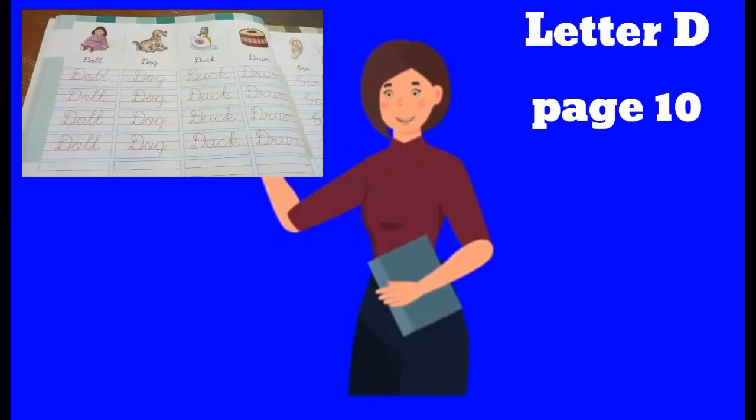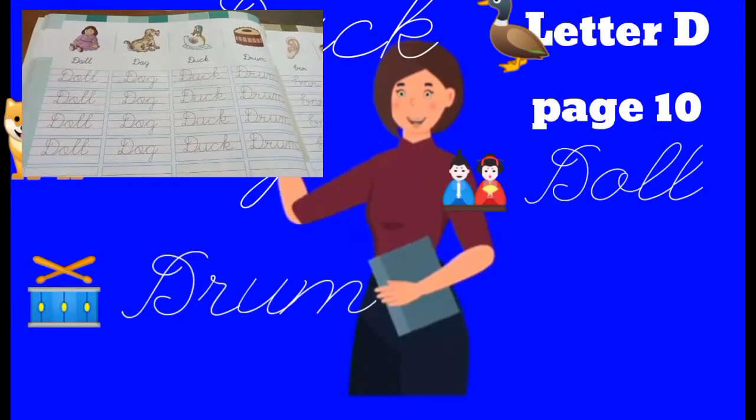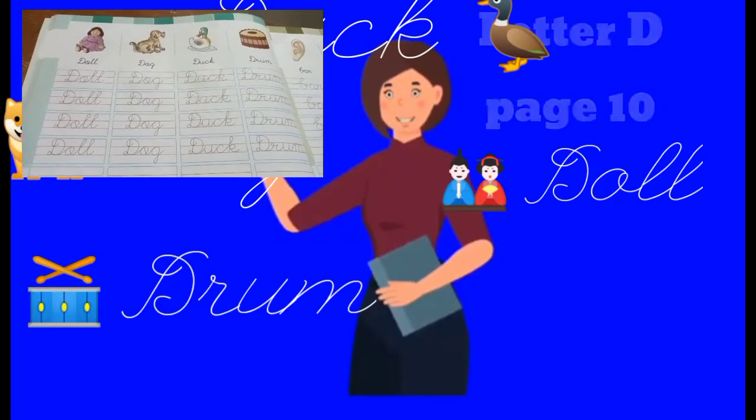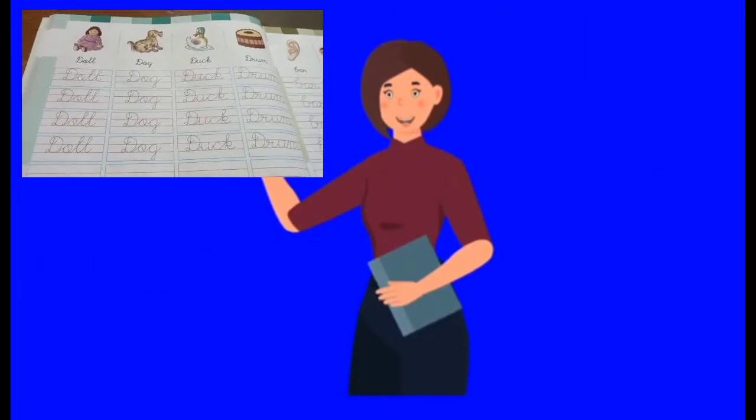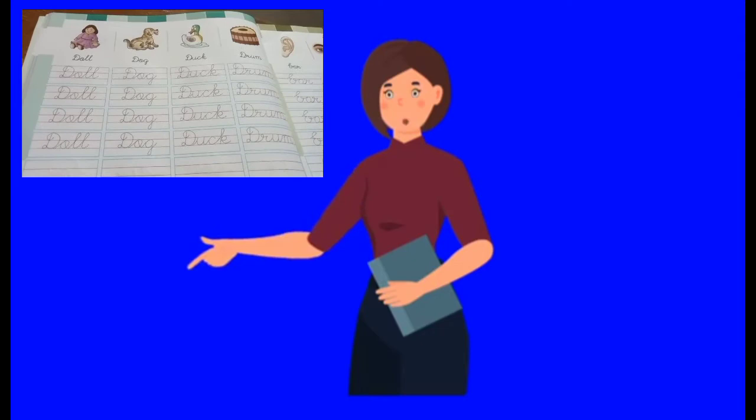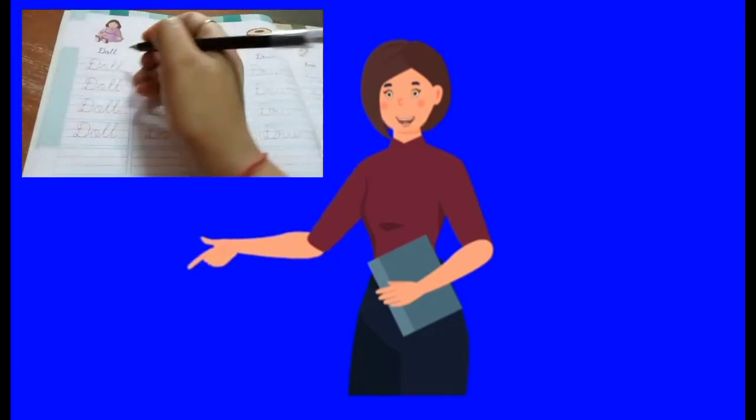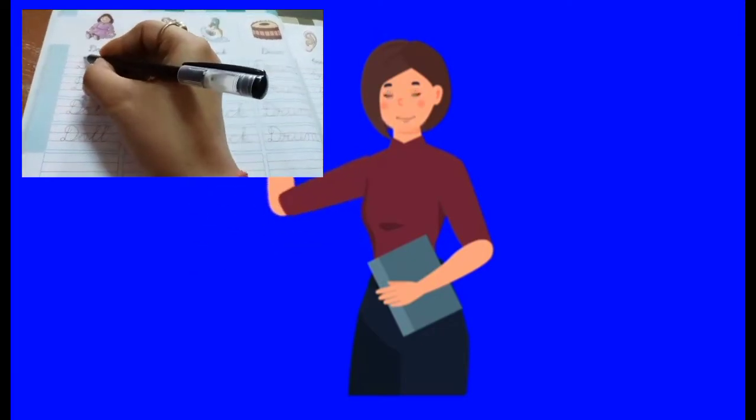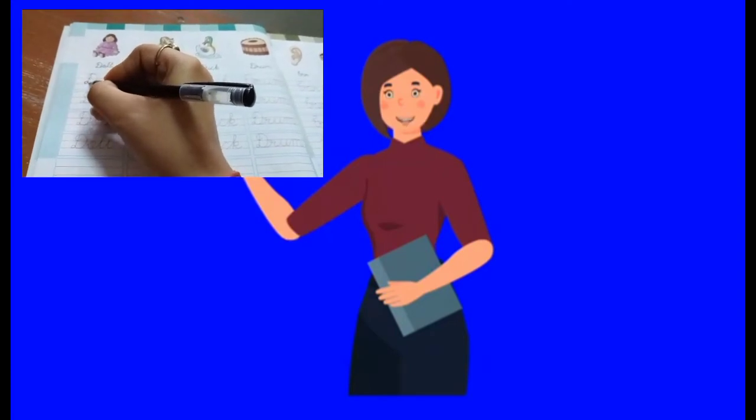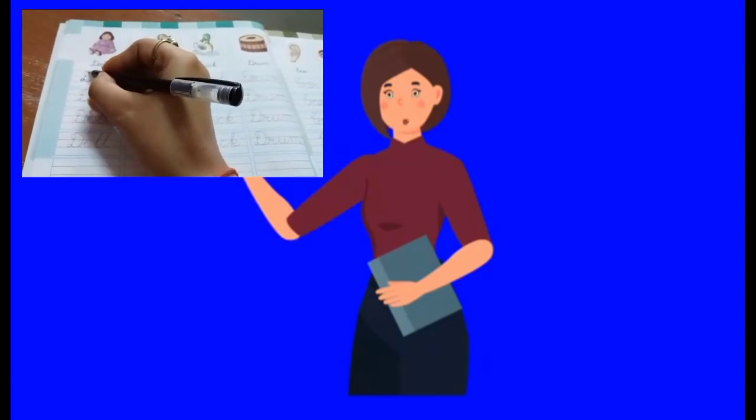Now let's do doll, dog, duck, drum. So what's the pronunciation? It's D. Right? Always start with the capital letter. So you know how to write D. You have already learnt. So it goes like this. A small twist. Bring it up. D done. Pick up your pencil.